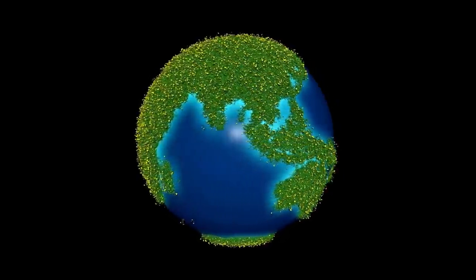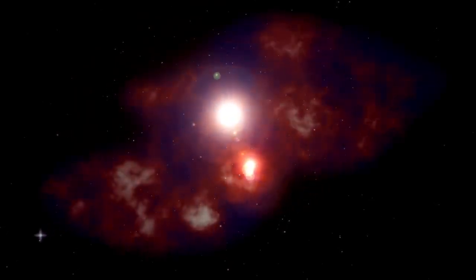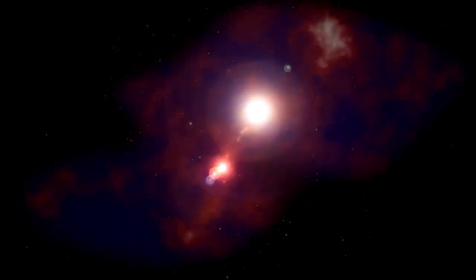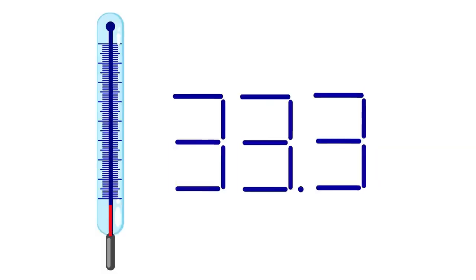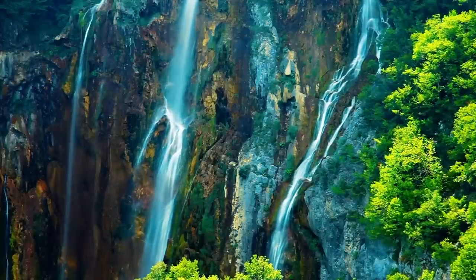Proxima b orbits its star at an incredibly close distance of about 0.04856 astronomical units, completing a full revolution in just 11.2 Earth days. Its mass is approximately 1.07 times that of Earth, suggesting that it may have a rocky surface like our own planet.